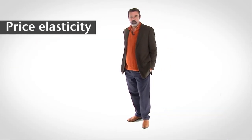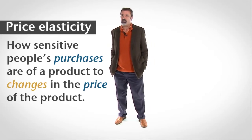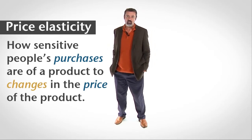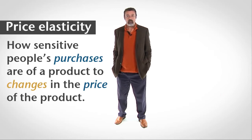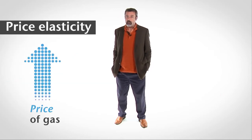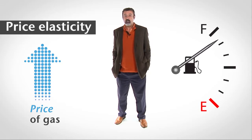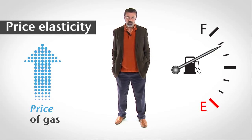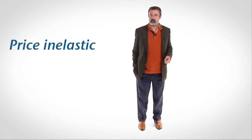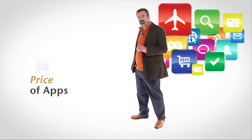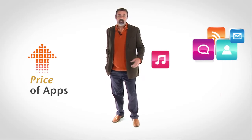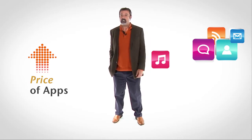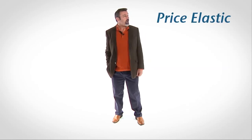The price elasticity of demand tells us how sensitive people's purchases are of a product to changes in the price of the product. For example, if the price of gas rises a lot and you buy only a little less gas than you did before, we say that your consumption of gas is not very sensitive to price changes — economists say that your consumption of gas is price inelastic. If the price of apps rises a little and you buy a lot fewer apps, then we say your consumption of apps is very sensitive to price changes — economists say your consumption of apps is price elastic.